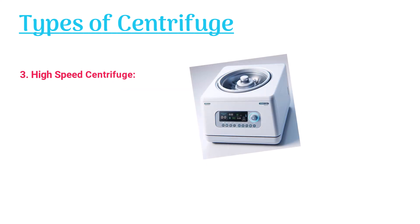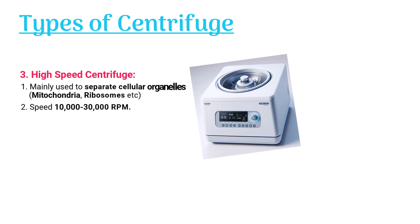The high speed centrifuge is mainly used to separate cellular organelles like mitochondria and ribosomes. Its speed ranges between 10,000 to 30,000 rpm.